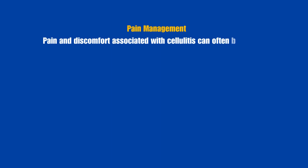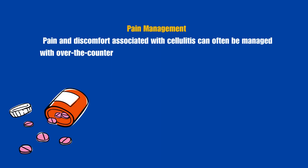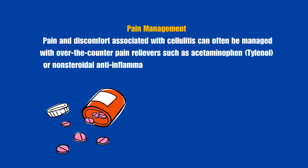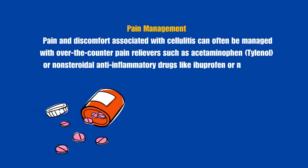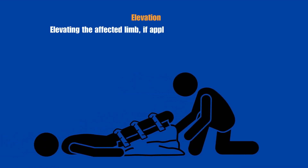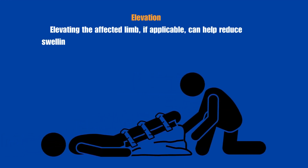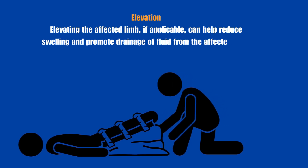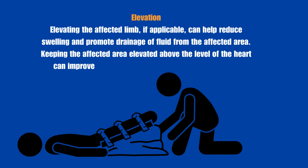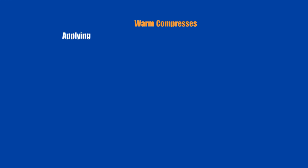Pain management: Pain and discomfort associated with cellulitis can often be managed with over-the-counter pain relievers such as acetaminophen (Tylenol) or nonsteroidal anti-inflammatory drugs like ibuprofen or naproxen. Severe pain may require prescription pain medications. Elevation: Elevating the affected limb, if applicable, can help reduce swelling and promote drainage of fluid from the affected area. Keeping the affected area elevated above the level of the heart can improve blood circulation and reduce inflammation.